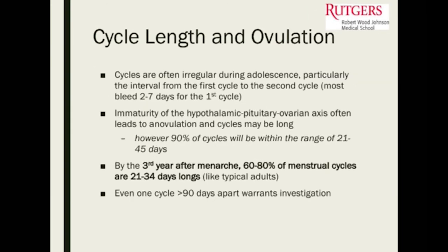Cycles are often irregular in the adolescent age range, particularly the interval from first to second menstrual cycles. Immaturity of the HPO axis leads to anovulation. However, about 90% of cycles will get into the proper range within two to three years of starting periods. By the third year after menarche, 60 to 80% of menstrual cycles are 21 to 34 days long — typical adult cycles. If a girl has cycles 90 days apart, even once, that probably should be evaluated per current recommendations.